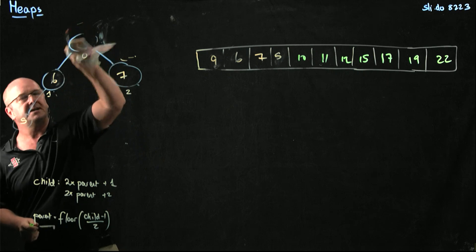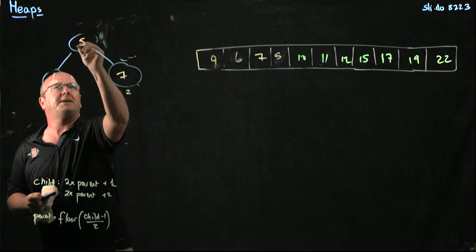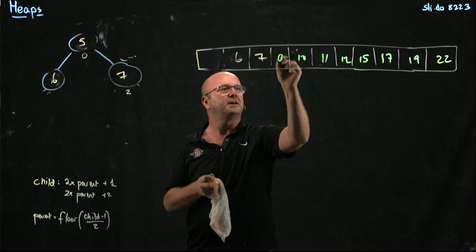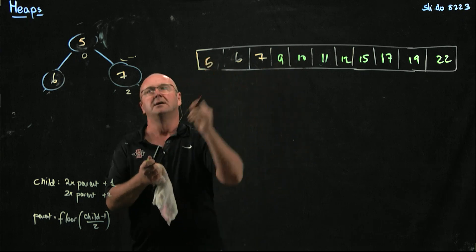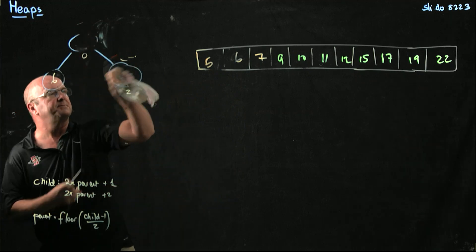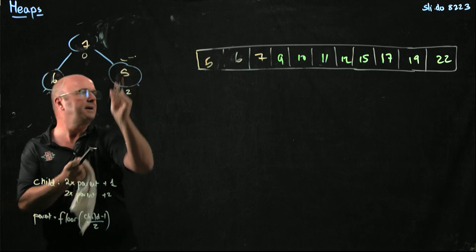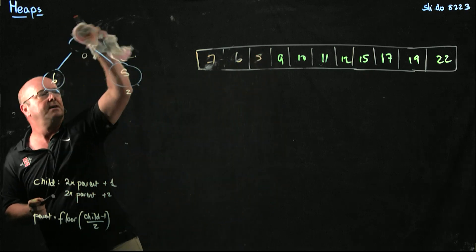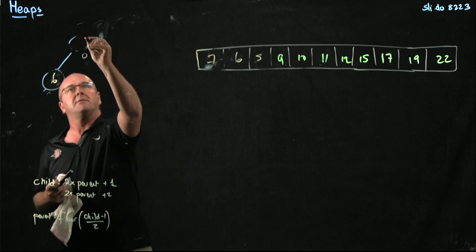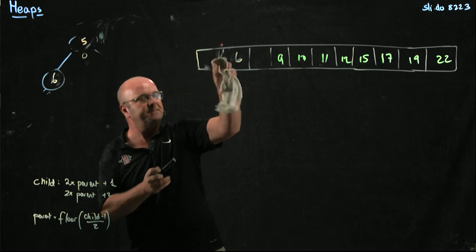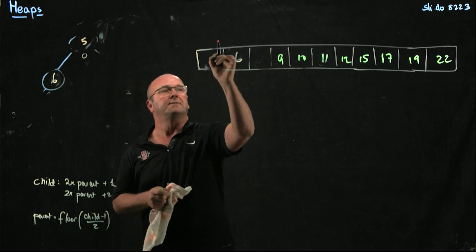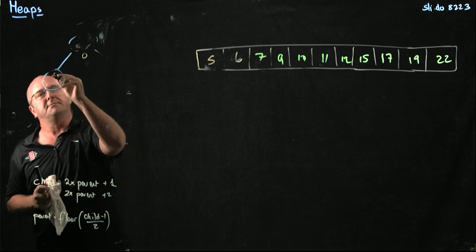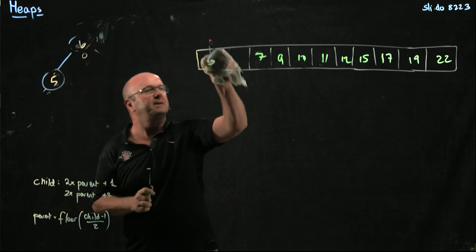Now we take away the 9. The way we take away the 9 is we swap it with the 5. Swap the 5 and the 9 — we've got the 9 and the 5. We've got to correct the heap, so we swap the 7 and the 5. And now we take away the 7. The way we take away the 7 is we swap it with the 5. So we've got the 5 and the 6.